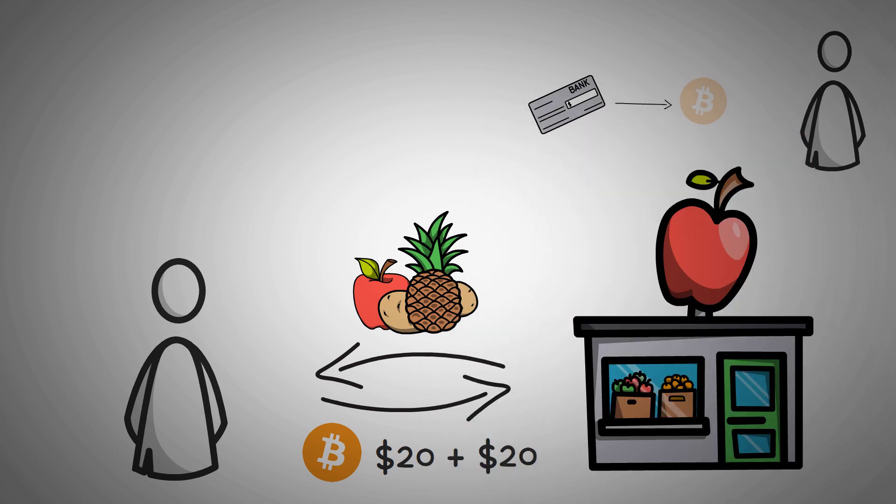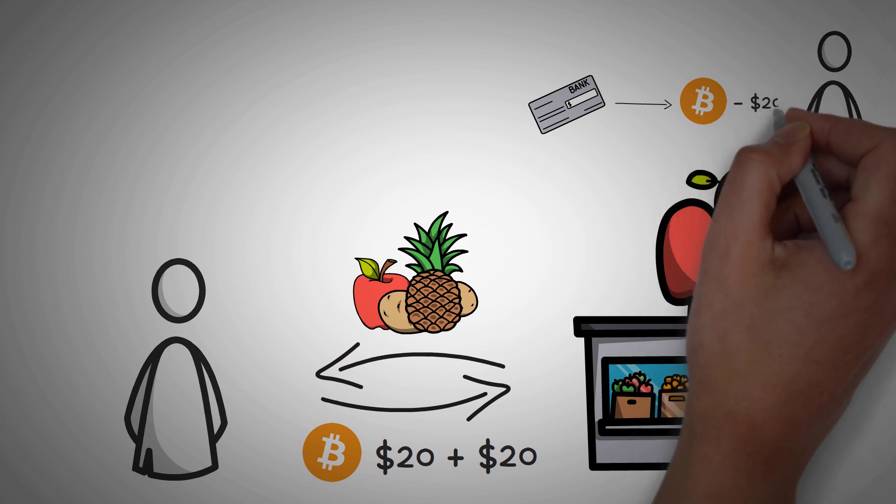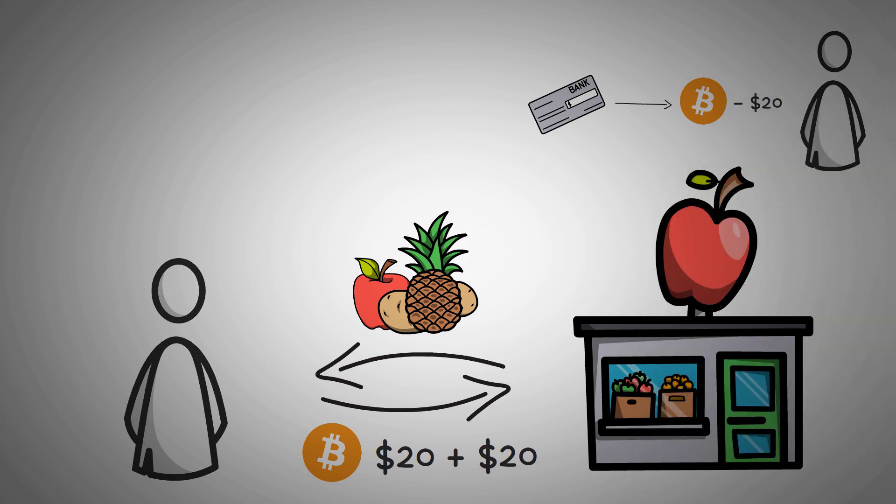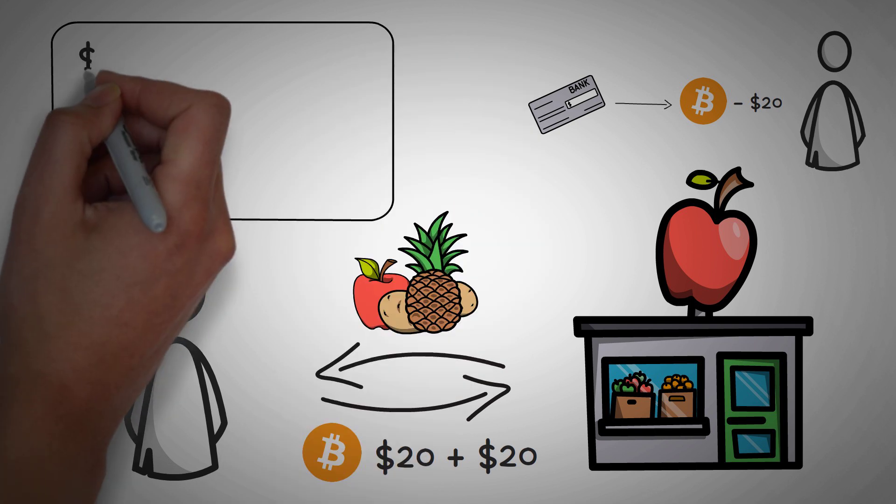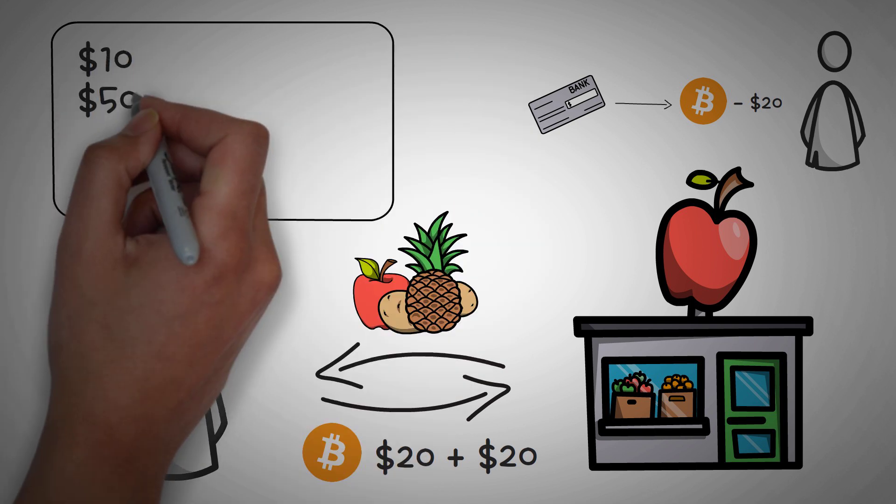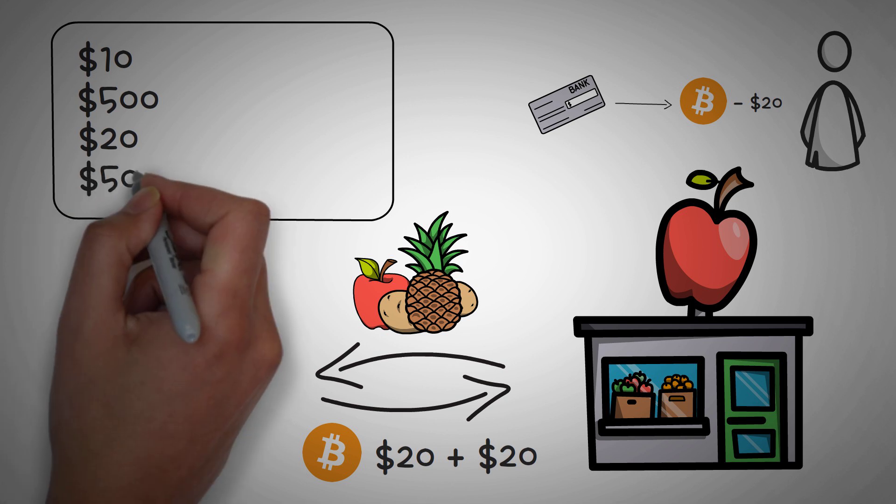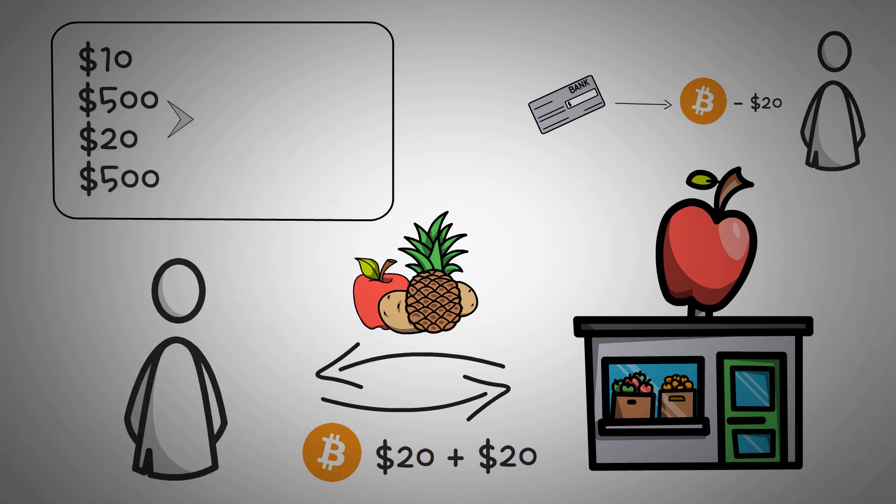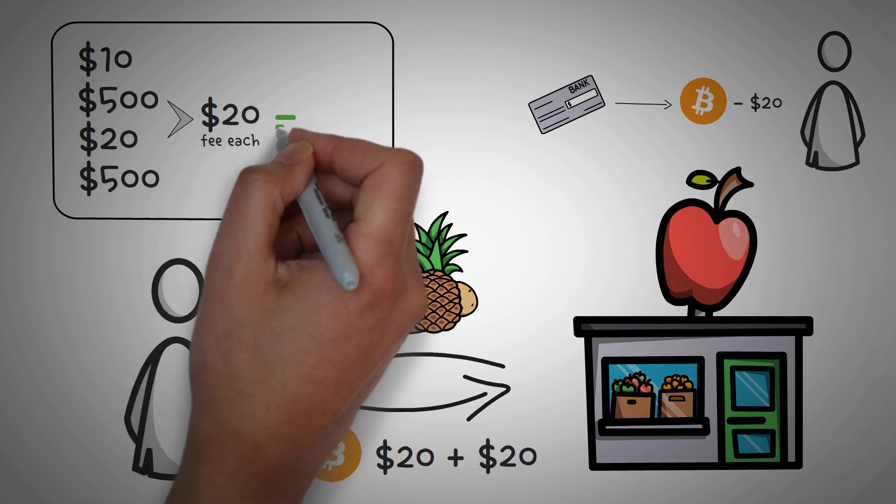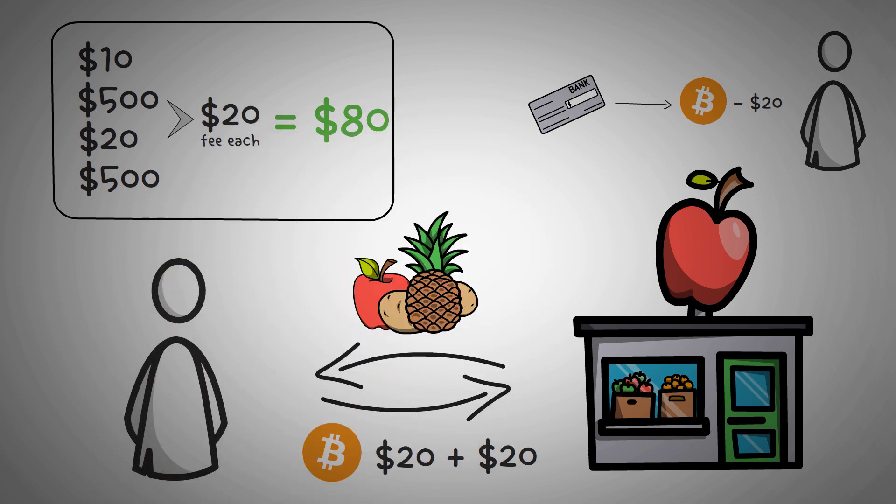So, I tell the grocery store I want to be paid in Bitcoin, and they decide to try it out. They pay the $20 fee, even though they only subtracted it from my pay. Now, so far in this list of transactions, we have a $10 transaction, a $500 transaction, a $20 transaction, and then lastly, another $500 transaction. And in each of these, we've paid a $20 fee each time, which totals to $80 in fees.